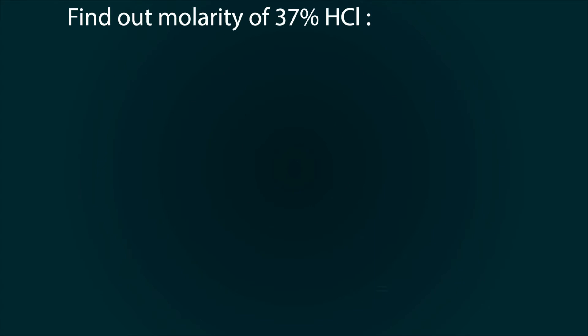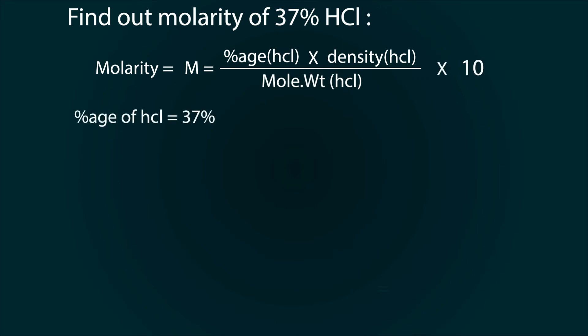we will find out the molarity of 37% HCl. The formula for molarity is: percentage of HCl multiplied by its density, divided by its molecular weight, then multiplied by 10. We have values as: percentage of HCl is 37%, density of HCl is 1.19, and molecular weight is 36.5.